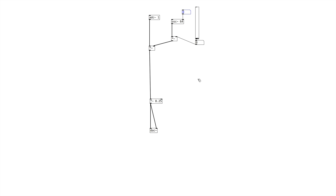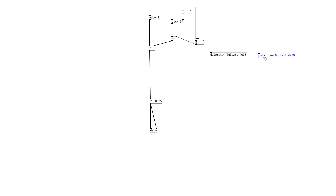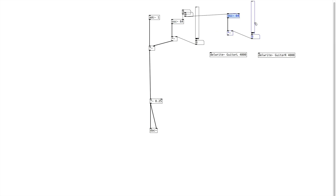Now let's go ahead and create another object, del~ — we're going to delete that — and create del~ and let's name this guitar L, and give that a tape delay of 4000. Let's go ahead and copy it again, and we're going to name this one guitar R. Okay, and then let's go ahead and copy this modulation unit, move that over here, and then let's duplicate that again.